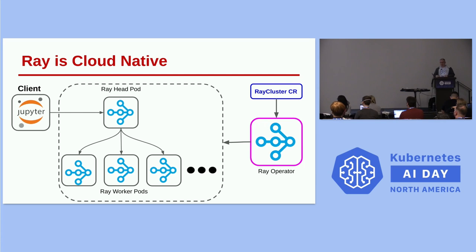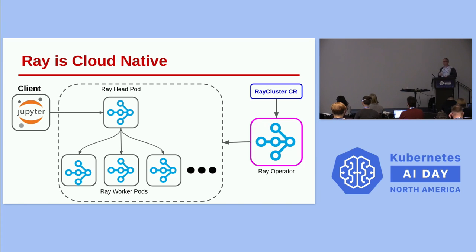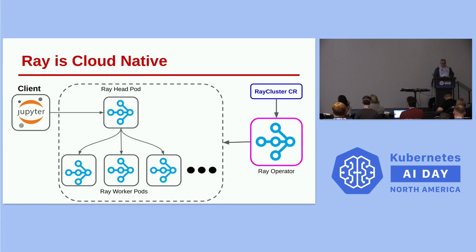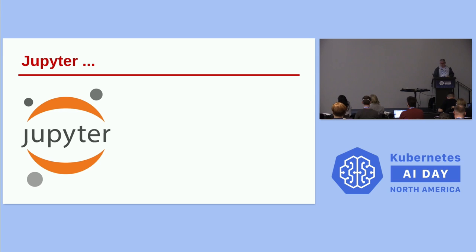Ray is cloud native. You create Ray clusters using a Ray cluster custom resource which you submit to the Ray operator. The operator sees you want a cluster and uses the information you provided about sizing and other cluster behaviors — it gives you a Ray head node and some worker nodes, and will automatically scale them up and down based on workload. Once you have this, you can connect to it from a client. Today I'll focus on Jupyter, but it doesn't have to be that — it can be other Python files or an actual command line exterior to the cluster.